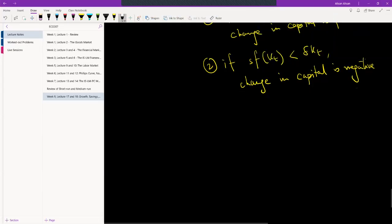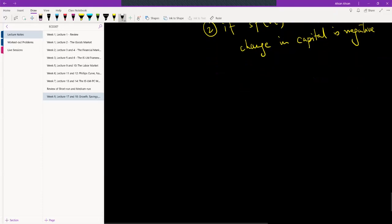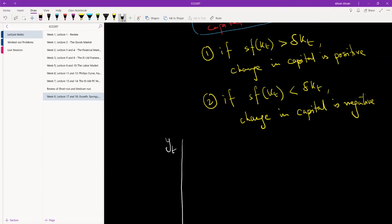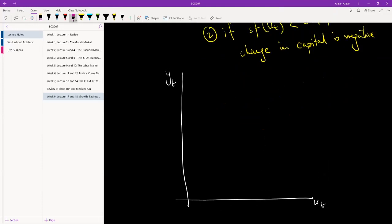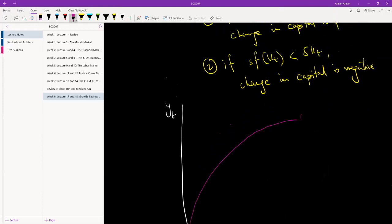Okay, so we're going to draw another diagram. Let me draw a big diagram because we're going to need it. So of course over here we have capital per worker, over here we have output per worker, and if you remember the diagram we had seen was this.